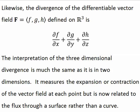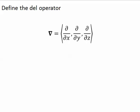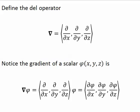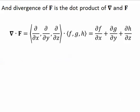Let's define this del operator. We use it as if it is a vector, even though it is an operator. For example, the gradient of a scalar function phi is the del operator times the scalar. And divergence of a vector field is the dot product of the del operator and the vector field.